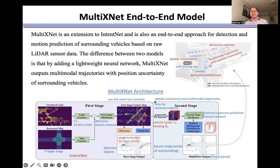MultiXNet, by adding a lightweight convolutional neural network to IntentNet, uses the detected vehicle information such as vehicle center and heading as input. The second stage predicts multimodal trajectories with position uncertainty for each detected vehicle.